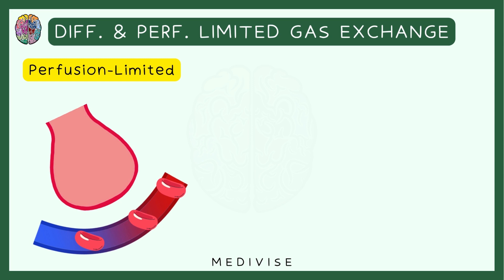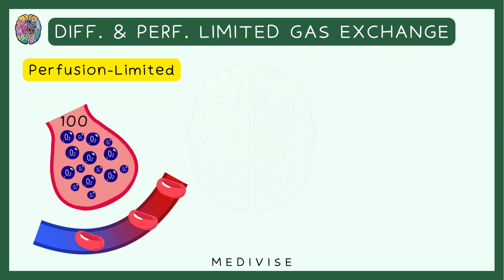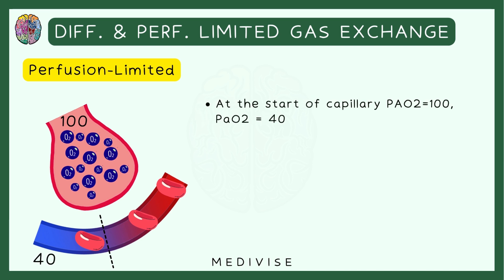Let's say we have an alveolus and a capillary. In the normal case, we have a lot of oxygen in the alveolus, which exerts a partial pressure of 100. Let's divide the capillary into 2 parts — the initial part and the later part. In the initial part, the partial pressure of oxygen is 40. So at the start of the capillary, the PAO2 (partial pressure of oxygen in the alveolus) is 100, and the partial pressure of oxygen in the artery is 40. The greater the partial pressure difference, the more rapid the diffusion. So here, oxygen moves from the alveolus into the capillary.